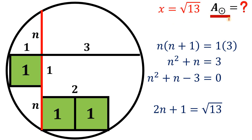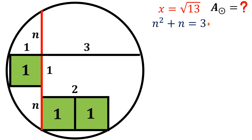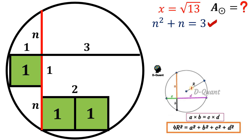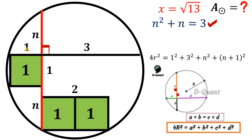Now for the second question: what is the area of this big circle? Let's keep in mind the equation n squared plus n equals 3, as we'll use it later. To find the area of the circle, we need the radius first. There's a theorem that if two chords are perpendicular and intersect inside the circle, the relationship between the radius r and the chord segments is: 4r squared equals a squared plus b squared plus c squared plus d squared. Using this, we get 4r squared equals 1 squared plus 3 squared plus n squared plus (n plus 1) squared.